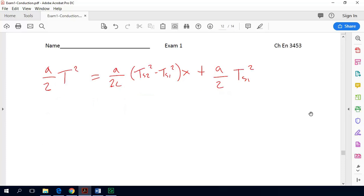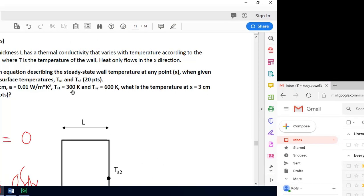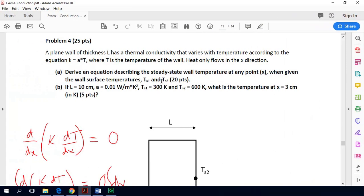So now we would take this equation and solve for t which is just going to be a function of x. So we would multiply the right hand side by 2 over a and then take the square root of it. So we end up with t of x is equal to the square root of Ts2 squared minus Ts1 squared multiplied by x over L plus Ts1 squared. And that is our solution to part A. So now we have this equation that tells us exactly what the temperature is going to be as a function of x through the wall.